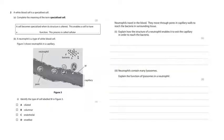Let's have a look at a few questions — you might want to pause the video and have a go yourself. The answer: a white blood cell is a specialized cell. Complete the meaning of the term 'specialized cell': a cell becomes specialized when its structure is altered, and this enables a cell to have a specific function.